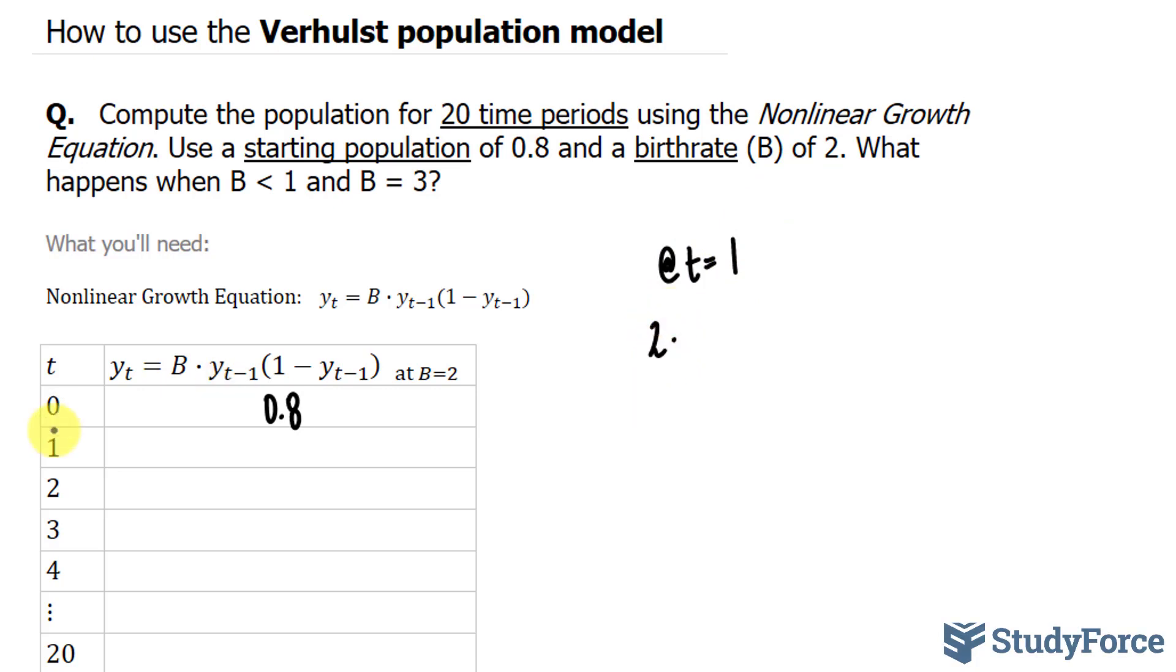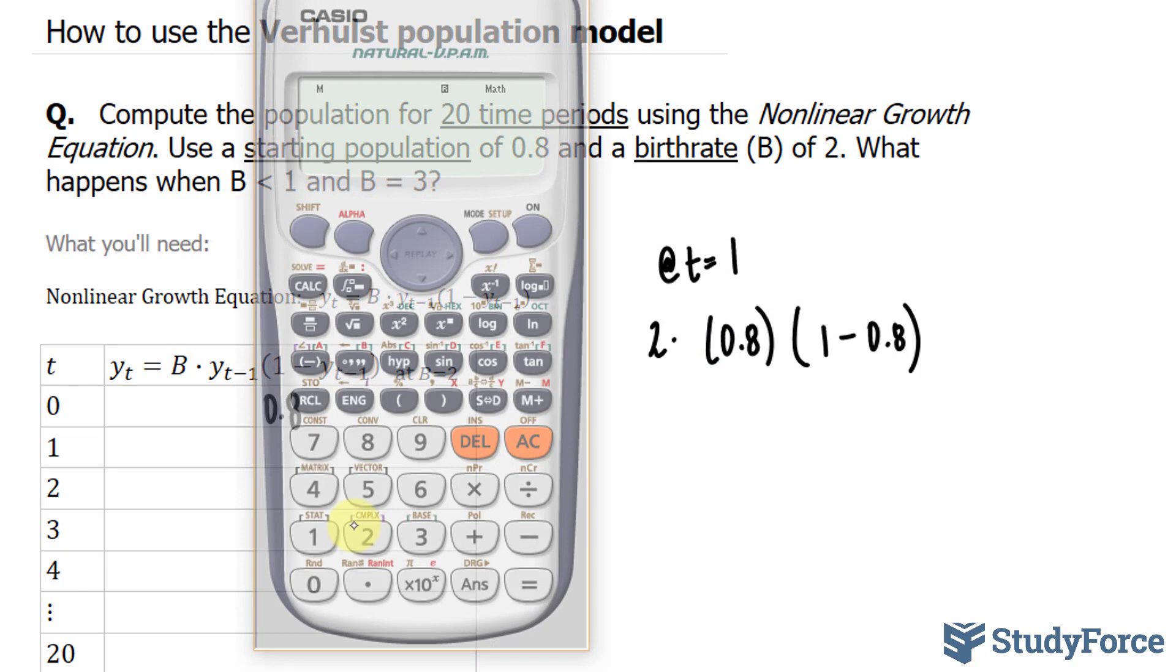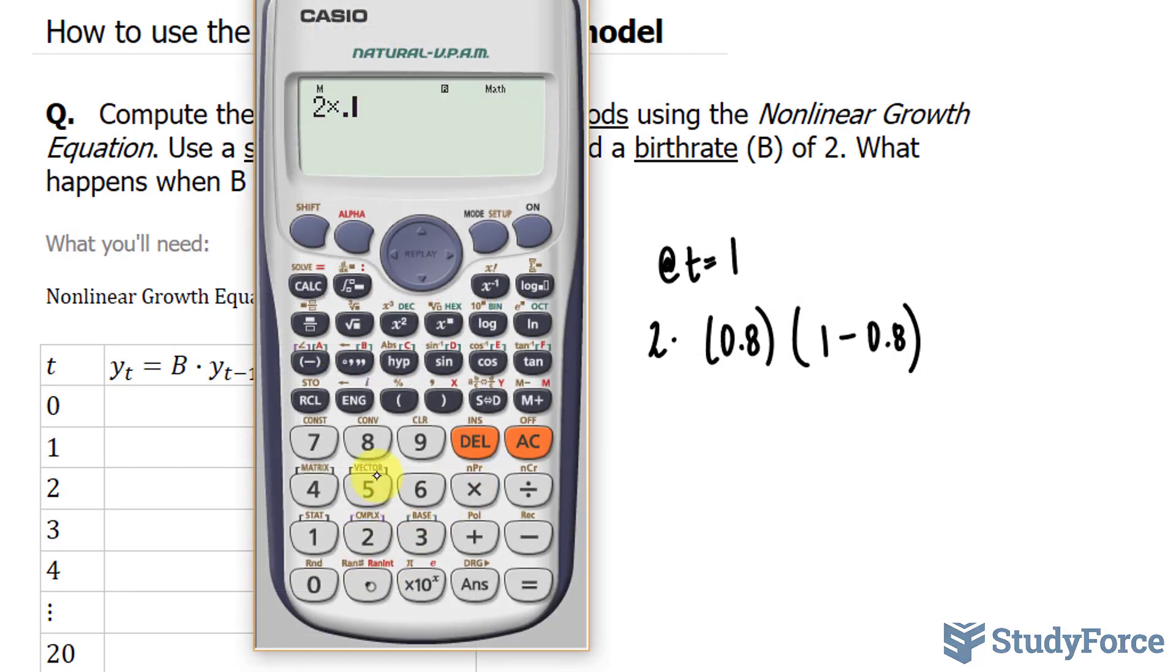Then you use the previous y output, which in our case was 0.8, times 1 minus 0.8. Using our calculator for this, we should end up for the output when t is equal to 1: 2 times 0.8 times 1 minus 0.8 gives us 0.32.